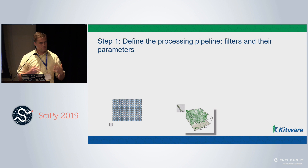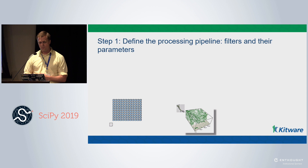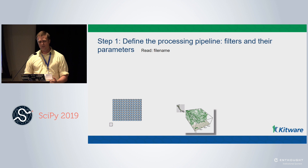There are four steps — fill in these four steps and you'll be able to create your analysis pipeline. Step one is pretty simple: we define a processing pipeline. We set up the filters and the parameters in our pipeline, starting with simply a reader — we're going to read the file, then do some Gaussian smoothing on the data.